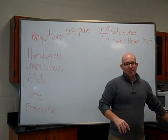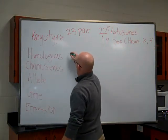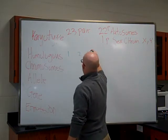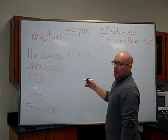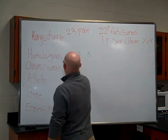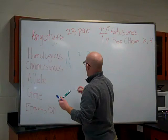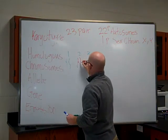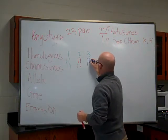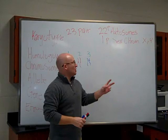Homologous chromosomes are roughly the same thing. When we say we have 23 pairs, we mean we have one pair of number one chromosomes, number two chromosomes, number three, and so on all the way up to the sex chromosomes — and then you have a pair of sex chromosomes. So chromosome number one: I have two copies of it, two copies of number two, two copies of number three, all the way up to number 22, and then two sex chromosomes.